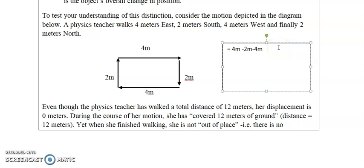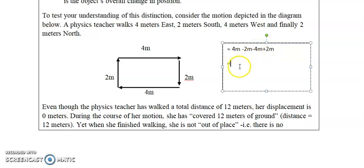Then two meters north is plus two. To solve, recall the rules for subtracting integers — change the sign of the subtrahend and proceed to addition. So: four minus two is two, minus four gives negative two, plus two gives zero meters. The displacement is zero meters — because she returned to her starting point, there is no displacement.